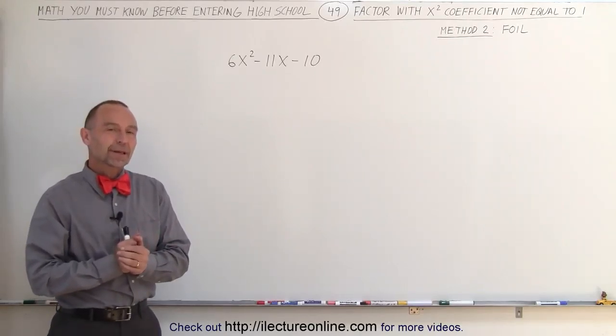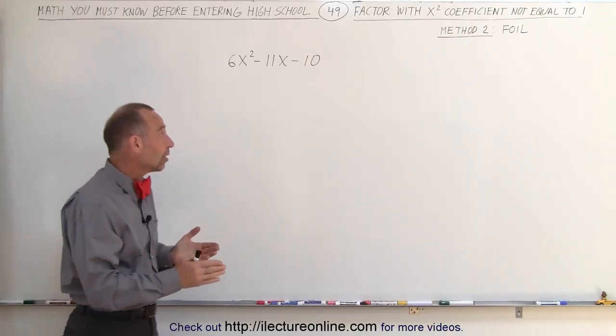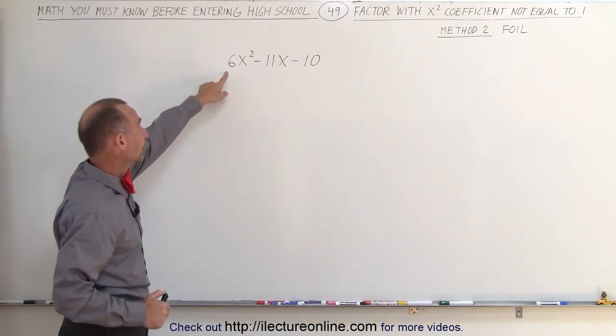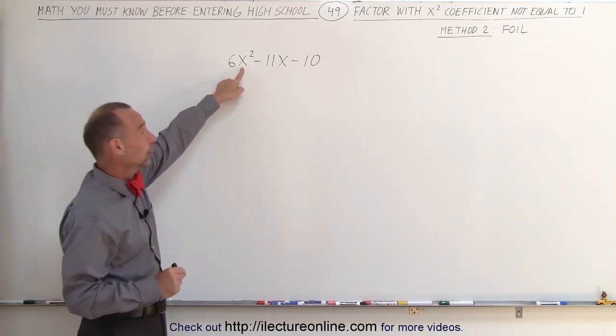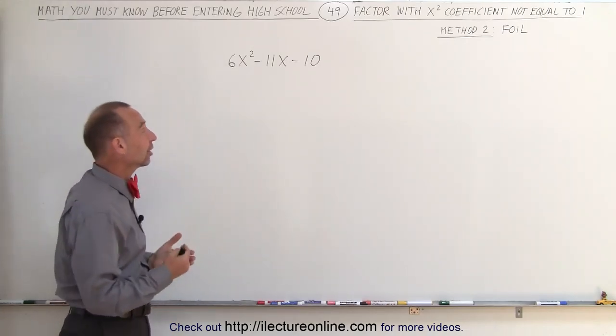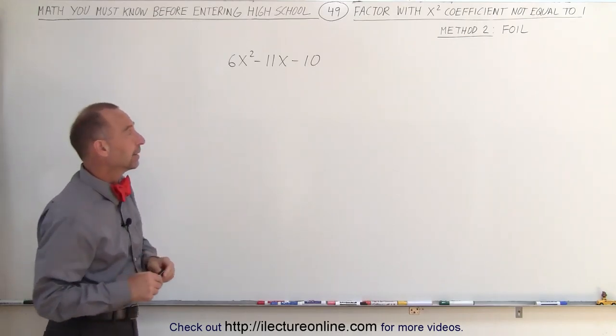Welcome to ElectronLine. A second method by which we can solve a trinomial where the coefficient of the x squared term is not equal to 1, and here we're trying to factor this trinomial, is called the FOIL method.